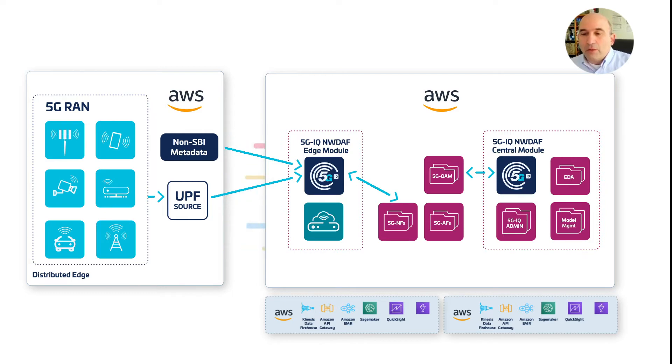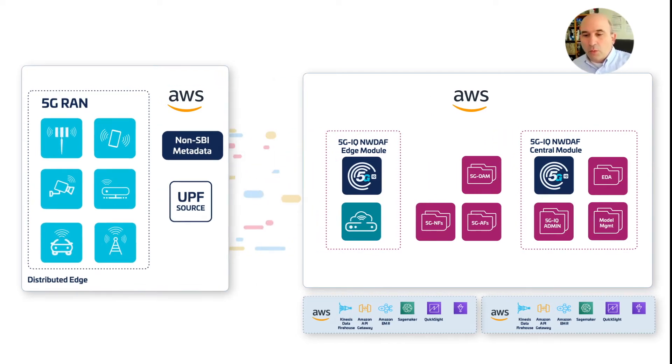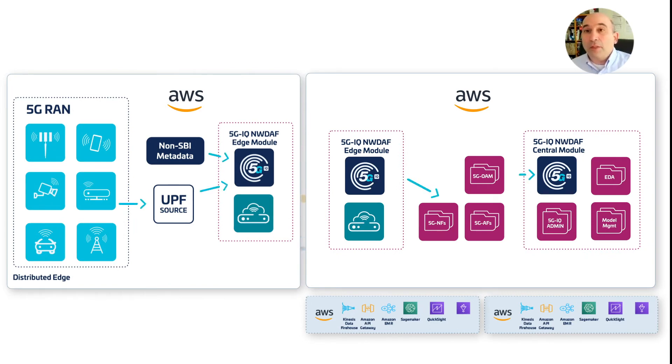This edge module can be co-located with the central module in an Amazon data center, or it can be distributed out to the edge of the network, providing data collection and wrangling, data reduction, and local scoring co-located with UPF and other distributed resource on Amazon outposts.